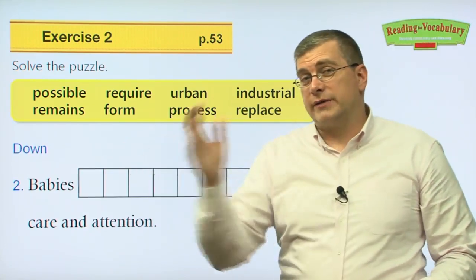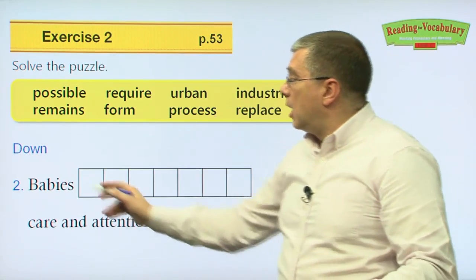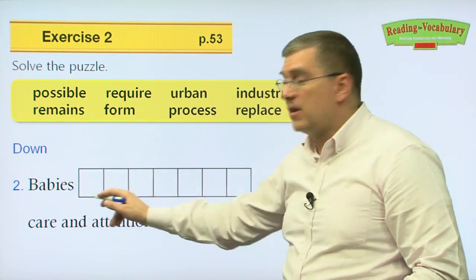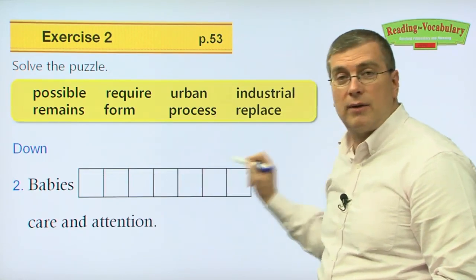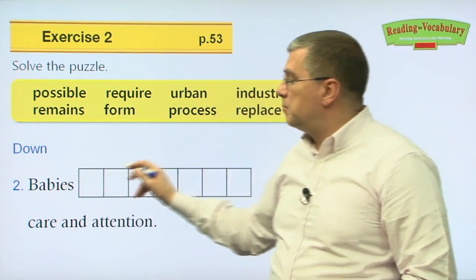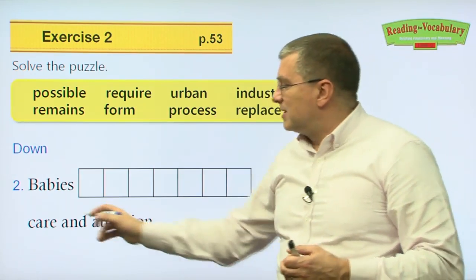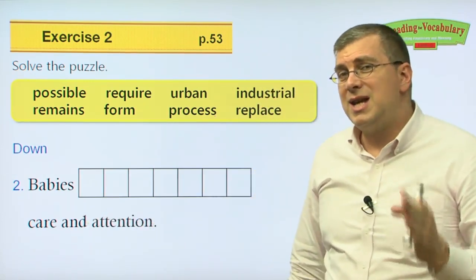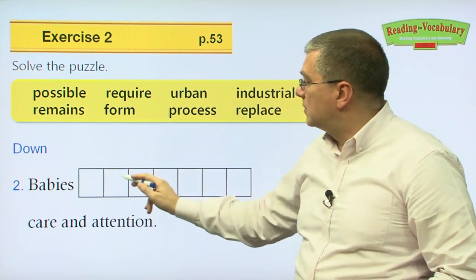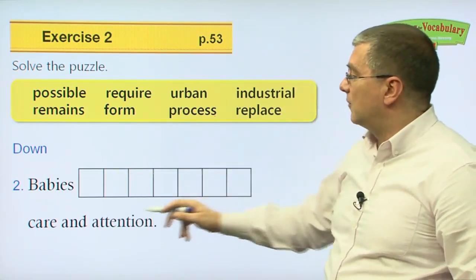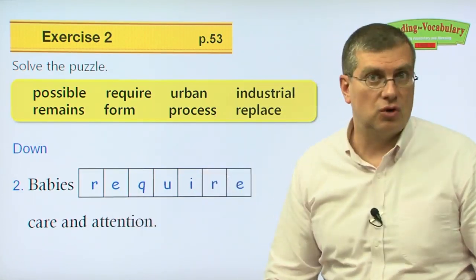That was the across words — they all had pictures. Now we're looking at the words that go down, and the clues are parts of sentences, like filling in the blank. Number two down: 'Babies blank care and attention.' Babies need something — what's another word for need that we talked about? Would it be 'require'? R-E-Q-U-I-R-E, seven letters — that fits and makes sense. Babies require care and attention. That's true, so that's the correct answer.